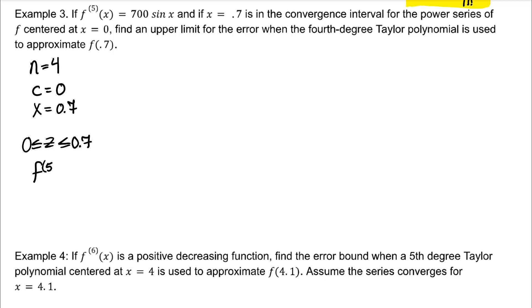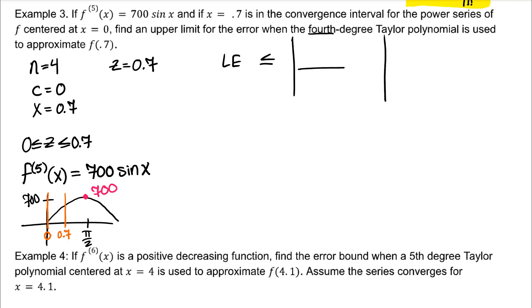The fifth derivative is 700 sin x. On this interval 0 to 0.7 sin x is increasing. The maximum y value on the interval 0 to 0.7 is 0.7. So z will equal 0.7. Making our formula.